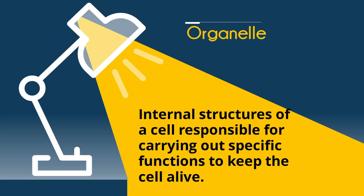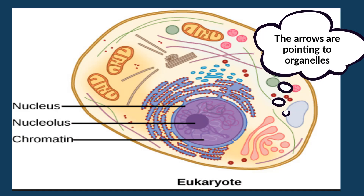And finally, organelle. This is an object or a structure inside a cell responsible for carrying out specific functions to keep the cell alive. If you look at this picture, you have a eukaryote cell and it has organelles. You can see a mitochondria, a Golgi apparatus, and a nucleus.